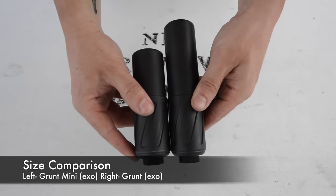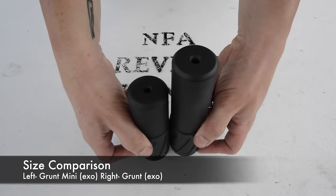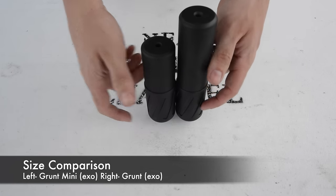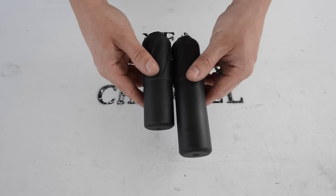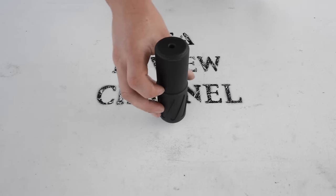Alright, I'm going to give you a quick size comparison here. I have the full size grunt on the right and the mini on the left so it is a very compact package. From testing the sound reduction didn't seem to suffer much especially to the shooter's ear.